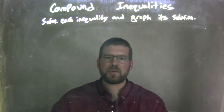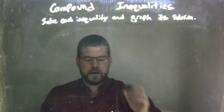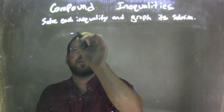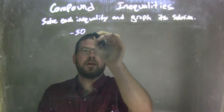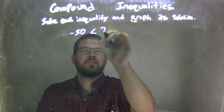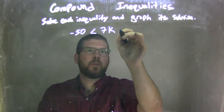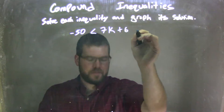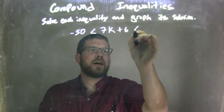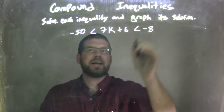So if I was given this inequality: negative 50 is less than 7k plus 6, which is less than negative 8.